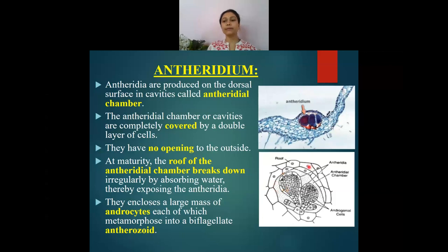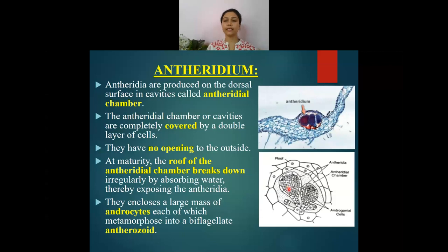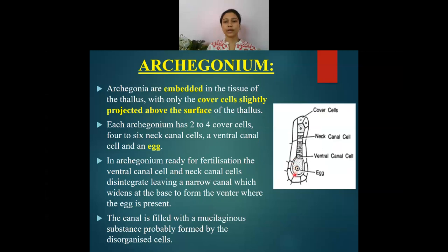In this diagrammatic view, two antheridia are developed within the antheridial chamber. The roof of the chamber is two-layered and well-protective. The antheridial chamber encloses a large mass of androcytes, and each androcyte cell later develops into biflagellate anterozoids (sperms).